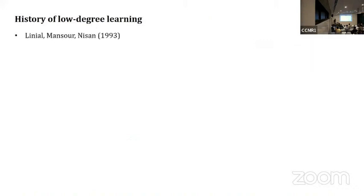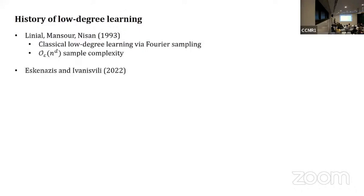Just some brief history. Linial, Mansour, and Nisan, this landmark paper from the early 90s, introduced or are understood as one of the early introducers of classical low-degree learning via Fourier sampling. They get O(n^d) sample complexity.